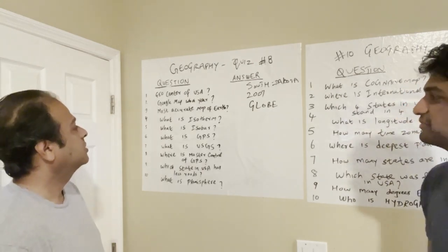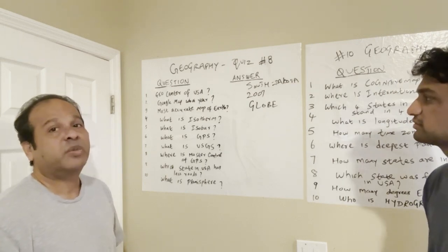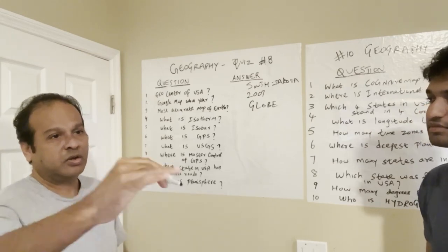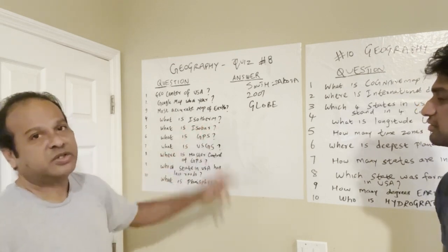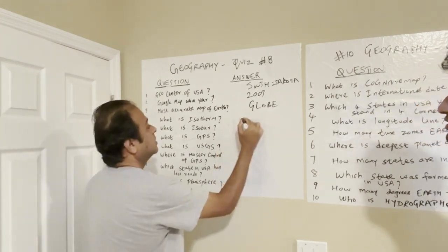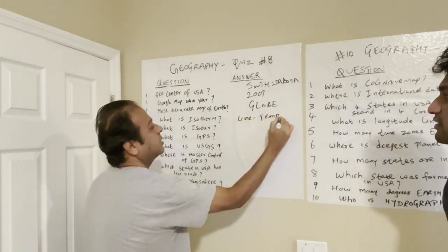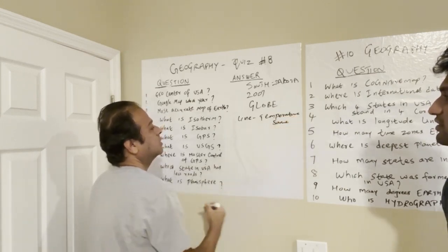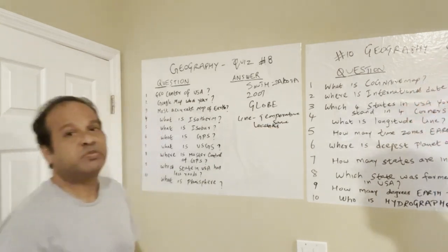What is an isotherm? Isotherm is a line on the globe where the temperature is the same for all locations along it. All the locations are pretty much the same temperature. The term means temperature. So it is a line where temperature is the same for the locations.